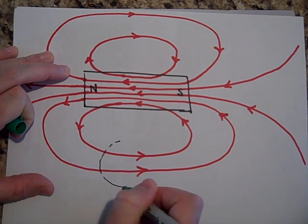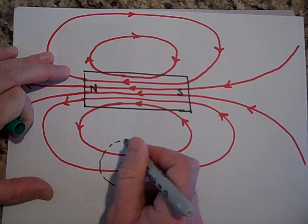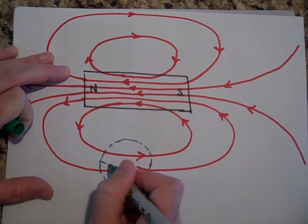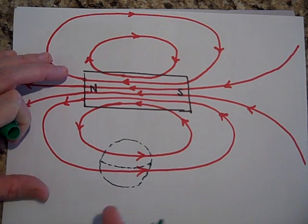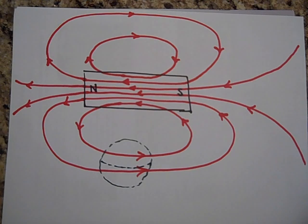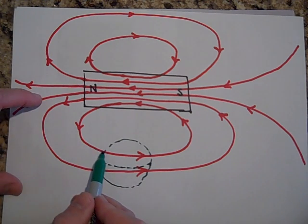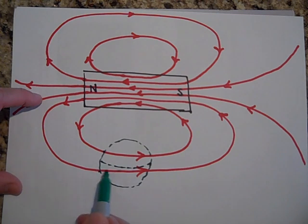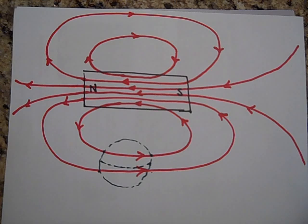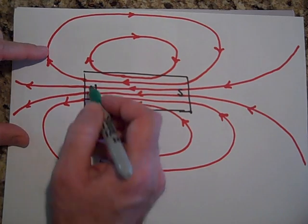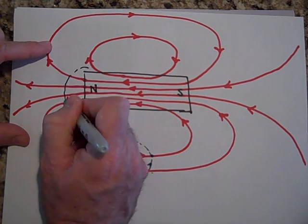I'll make them spheres because they're easy to see, but they could be cubes or any other type of closed surface. You see how the amount of lines going in are two, the amount of lines coming out are two, and so the total flux is going to be zero. And that's true if I put my Gaussian surface here too.